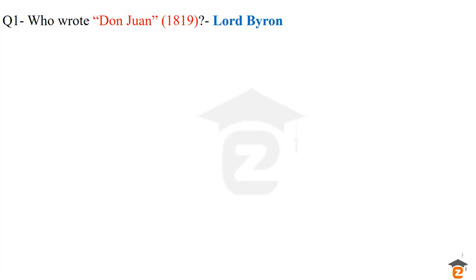The very first question of this video is: who wrote Don Juan, which was published in 1819? The answer is Lord Byron. Lord Byron was the composer of this poem. He himself called it an epic satire. It was based on a lover character whose name was Don Juan.